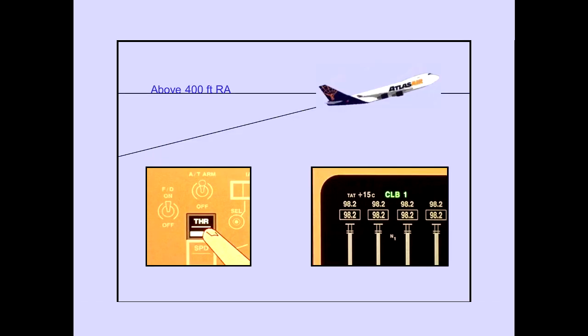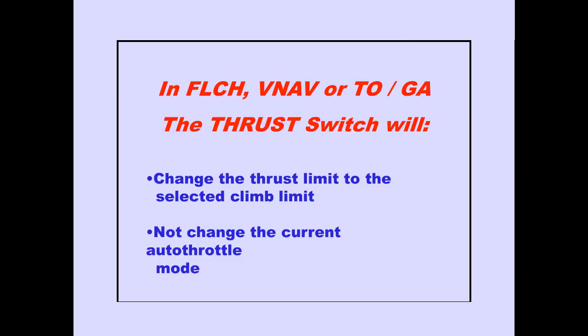Above 400 feet radio altitude, pushing the thrust switch changes the thrust limit to the selected climb thrust limit. Below 400, the thrust switch is disabled. If in flight level change or VNAV, selecting the thrust switch will change the thrust limit to the selected climb thrust. It will not change the autothrottle mode.